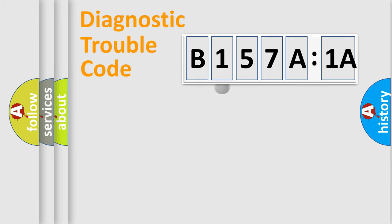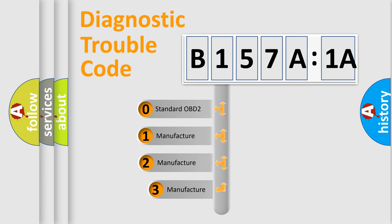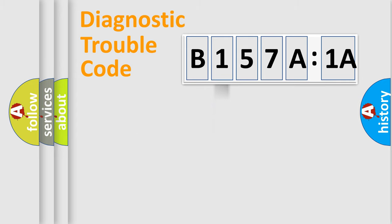The third character specifies a subset of errors. The distribution shown is valid only for the standardized DTC code. Only the last two characters define the specific fault of the group.